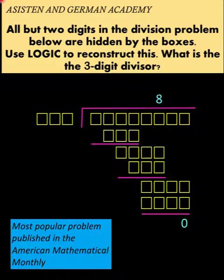Hi everyone, here's our math problem for today. We are given a division problem, but all the digits are hidden behind these boxes except only two digits, 8 and 0.